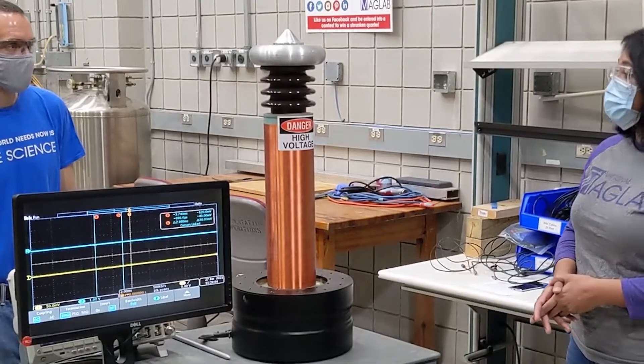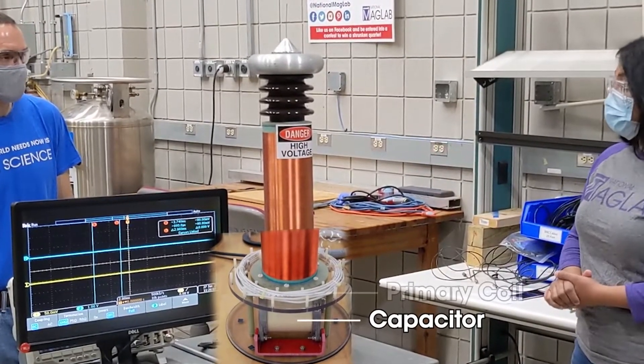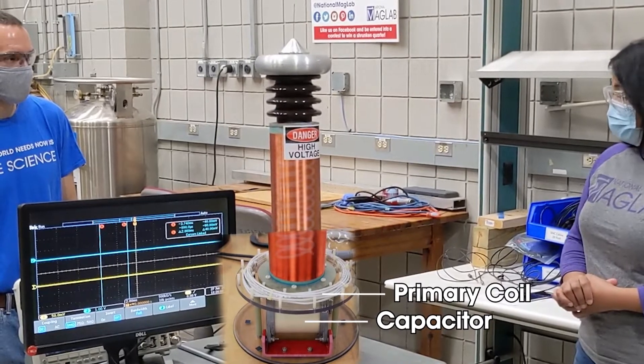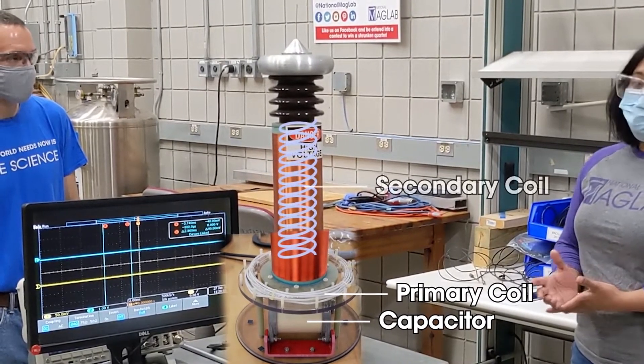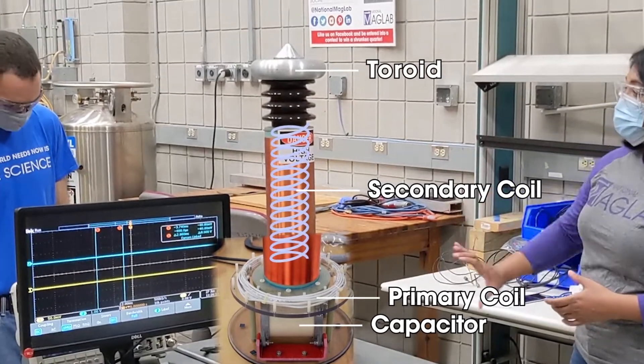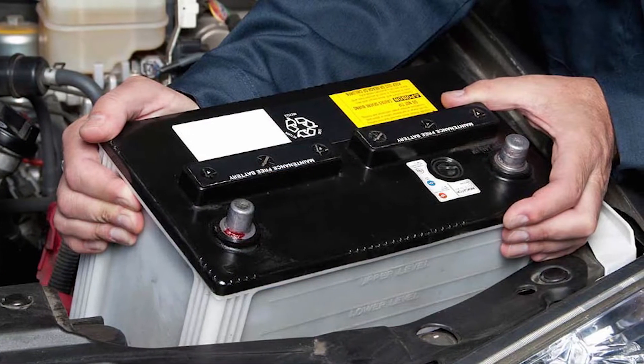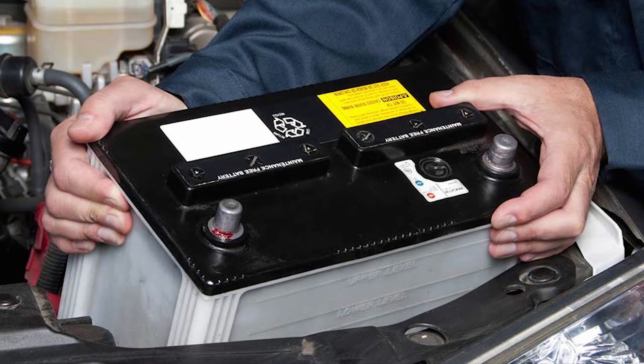In our Tesla coil, the primary coil has 10 turns, while the secondary coil has 1200. This is the transformer part of the Tesla coil. It takes 2000 volts and steps it up 125 times to 250,000 volts. For comparison, a car battery is about 12 volts.